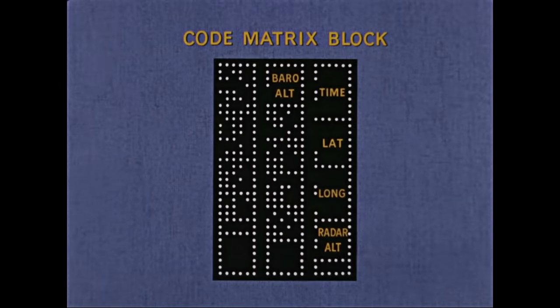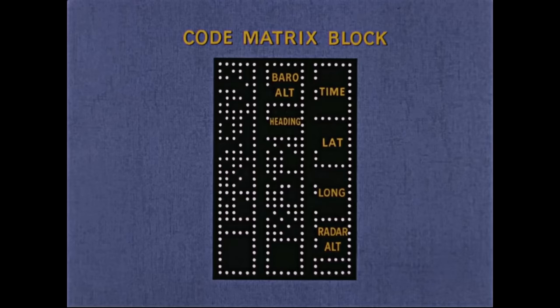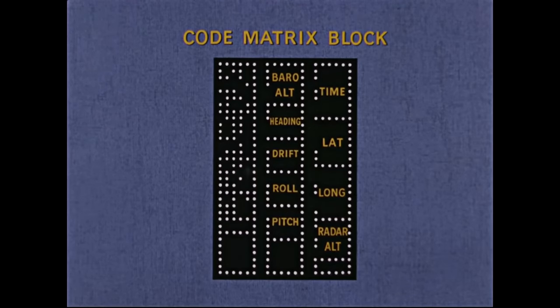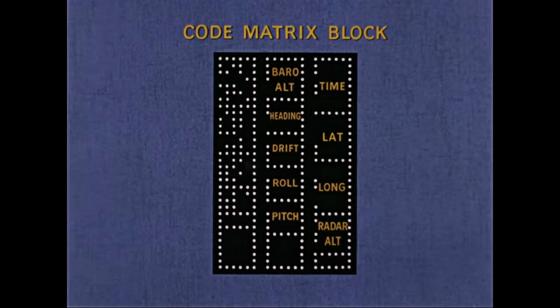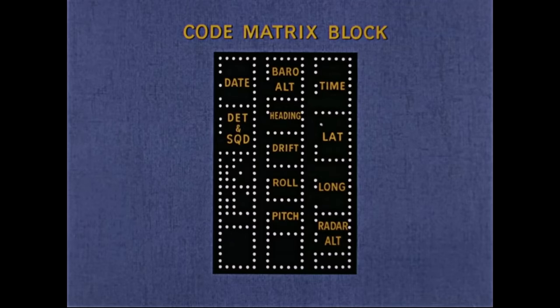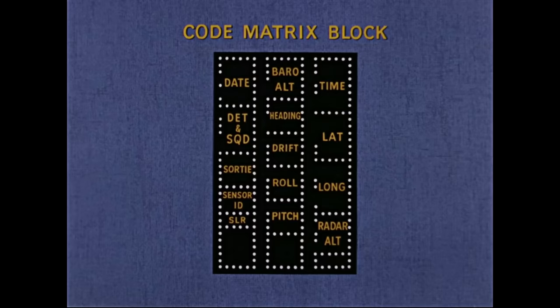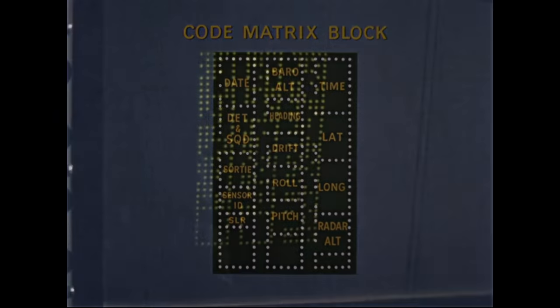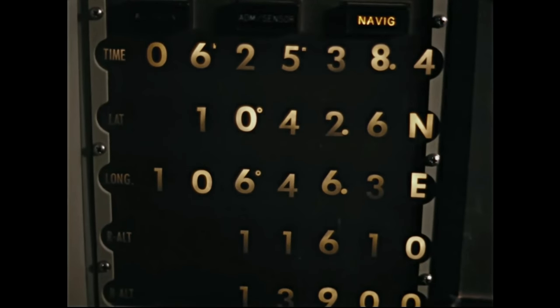The code matrix block also contains aircraft orientation data — heading, drift, roll, and pitch — as well as administrative data: date, detachment, squadron, sortie, sensor identification, and SLR mode if applicable. The equipment reads this data and presents it on the viewer display panel.